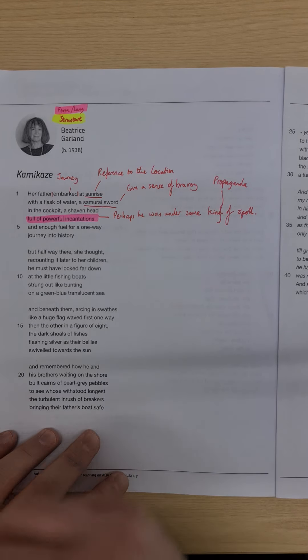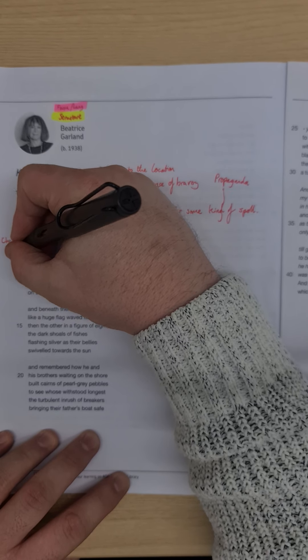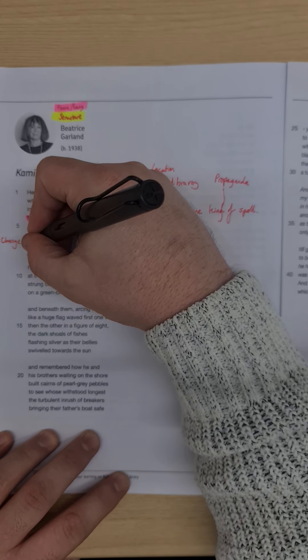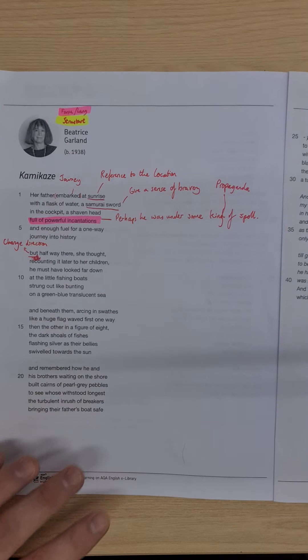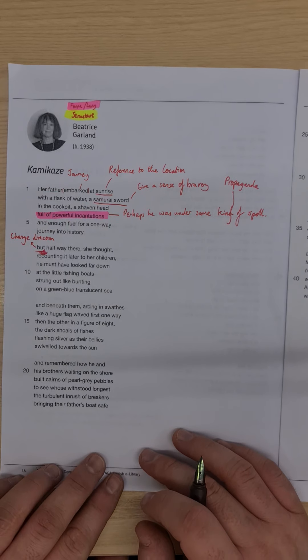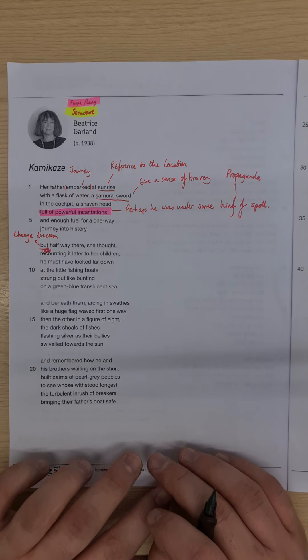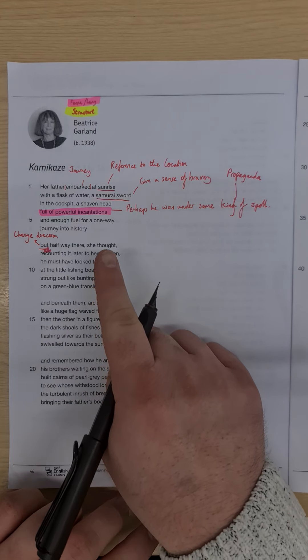So starting with 'but,' so it changed direction. The plane's still flying, but it's going to turn around. We know this. Halfway there, she thought. Oh, that's not what we expected there, with the 'she thought.'